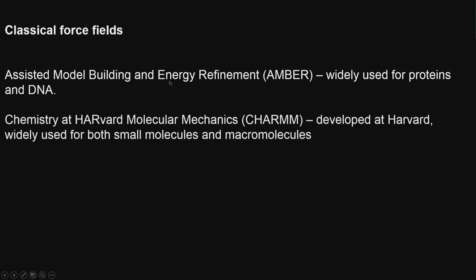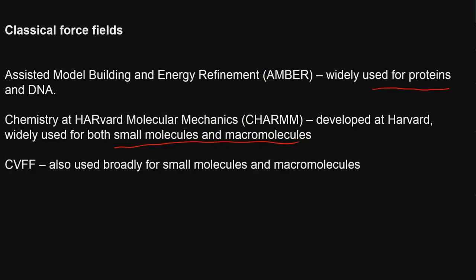AMBER (assisted model building and energy refinement) is widely used for proteins. CHARMM is another very popular force field used for small molecules and macromolecules. As a rule of thumb: MM-type force fields are used for organic drugs, AMBER is used for proteins, and CHARMM is used for small molecules and macromolecules.